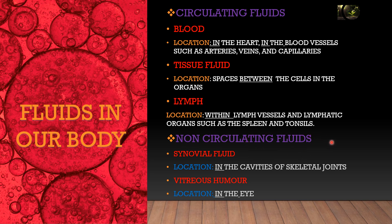The examples and locations of non-circulating fluids are important to know. Synovial fluid is in the cavities of skeletal joints; vitreous humor is in the eye. Note that while writing locations — such as 'in the heart,' 'in the blood vessel,' 'between the cells' — you must include prepositions, especially in biology examinations like the ICC, otherwise marks will be deducted.